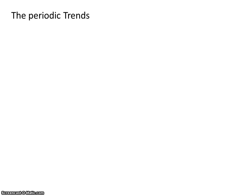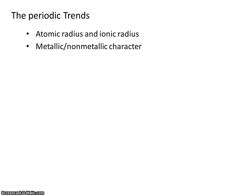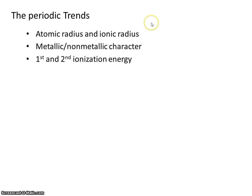Here are the trends we'll be studying this unit: atomic radius and ionic radius, metallic and non-metallic character, and lastly, first and second ionization energy. So these will be the periodic trends that we'll study this unit.